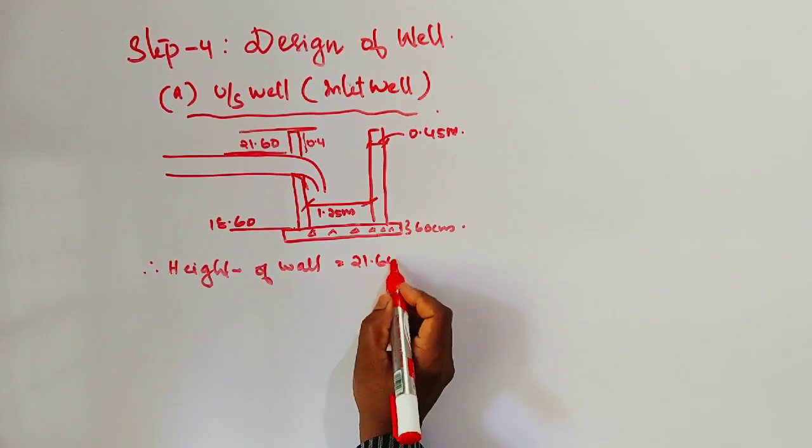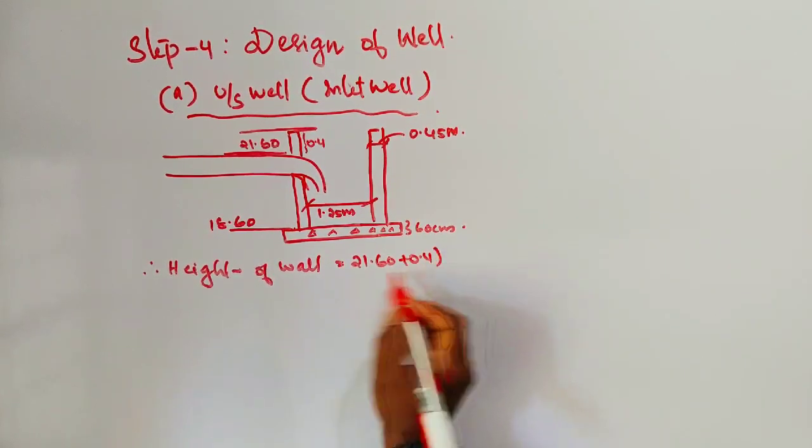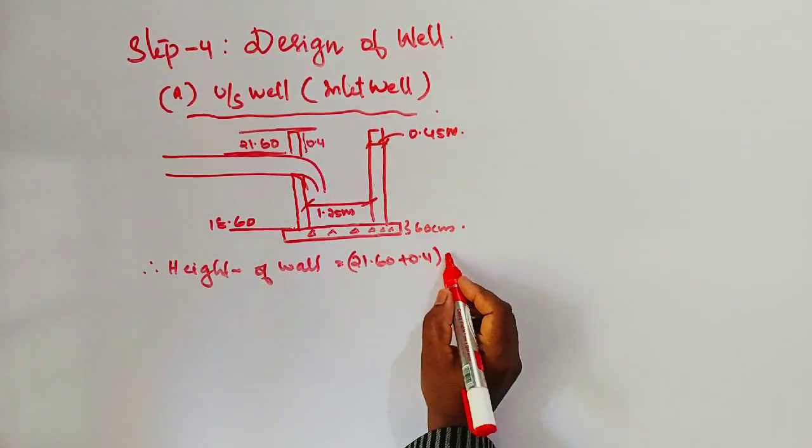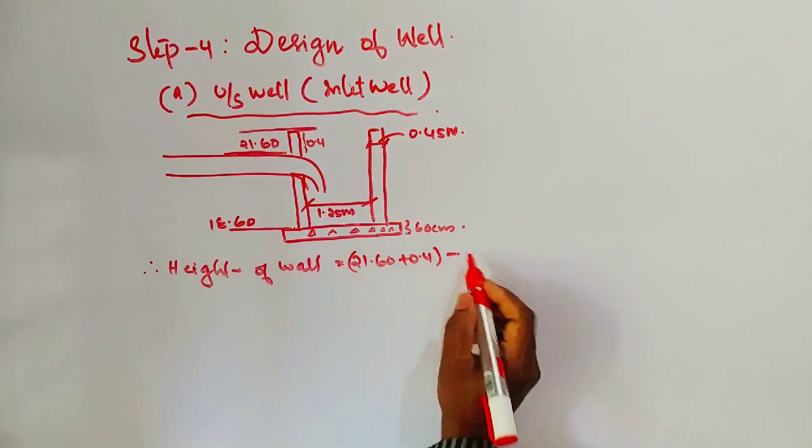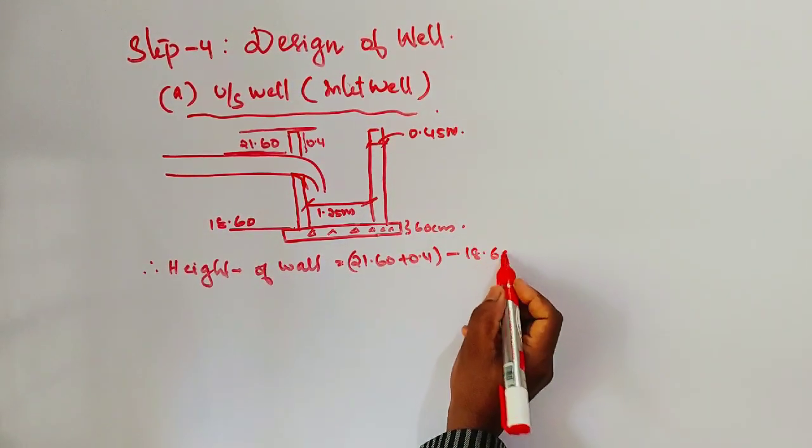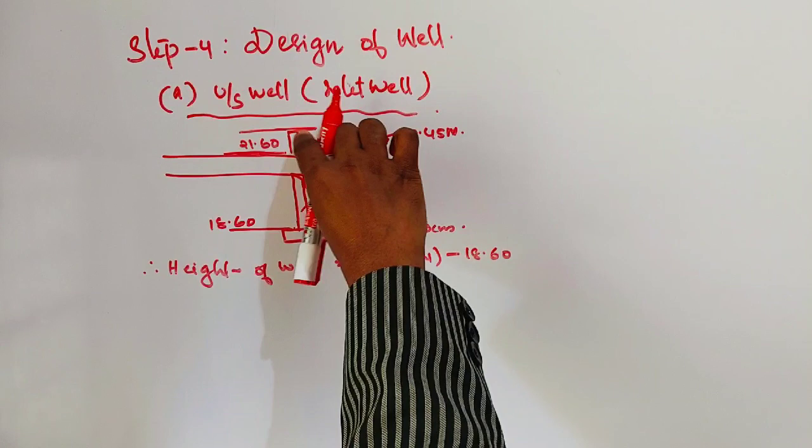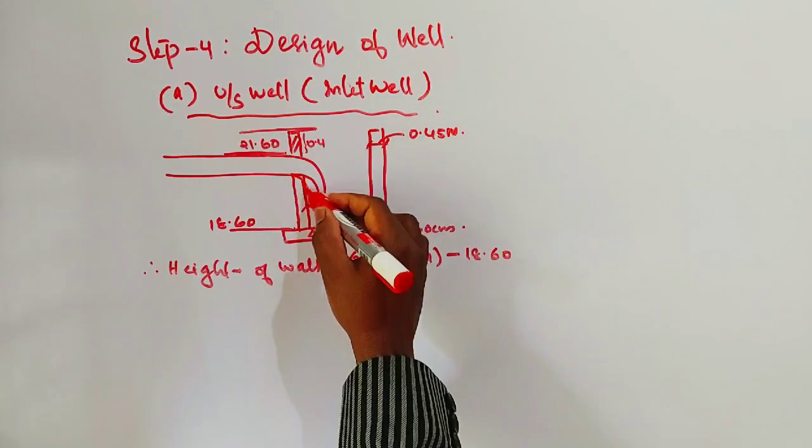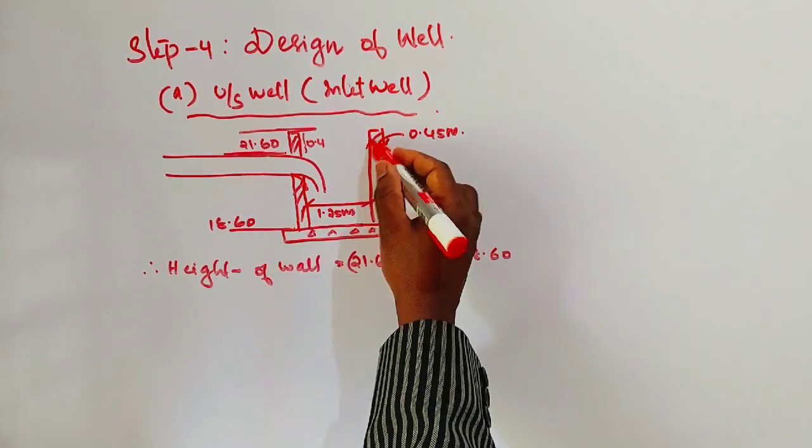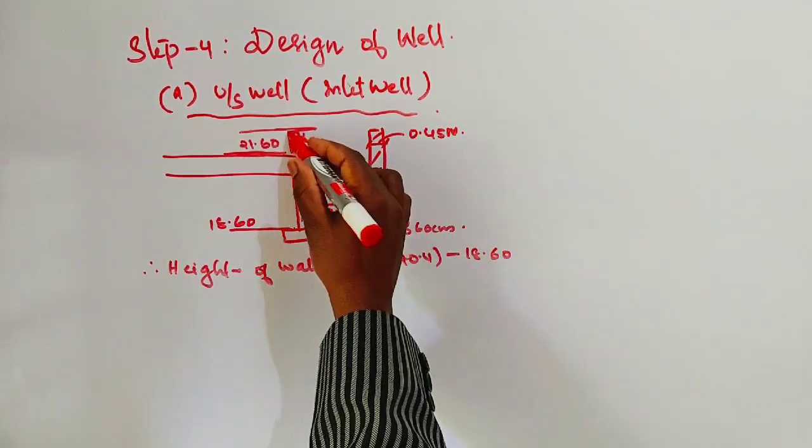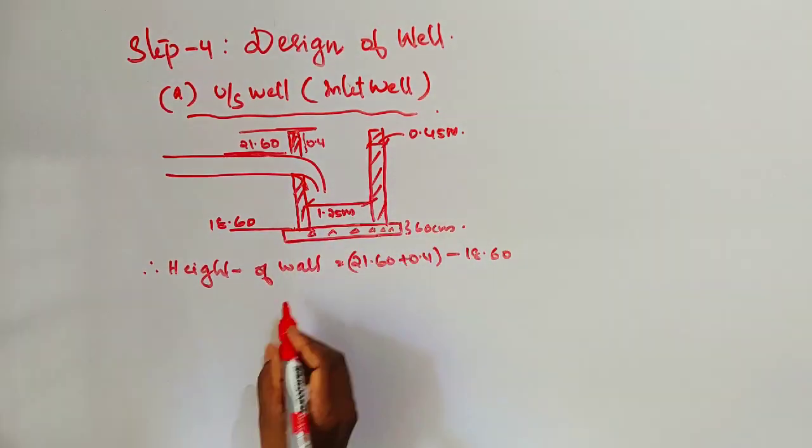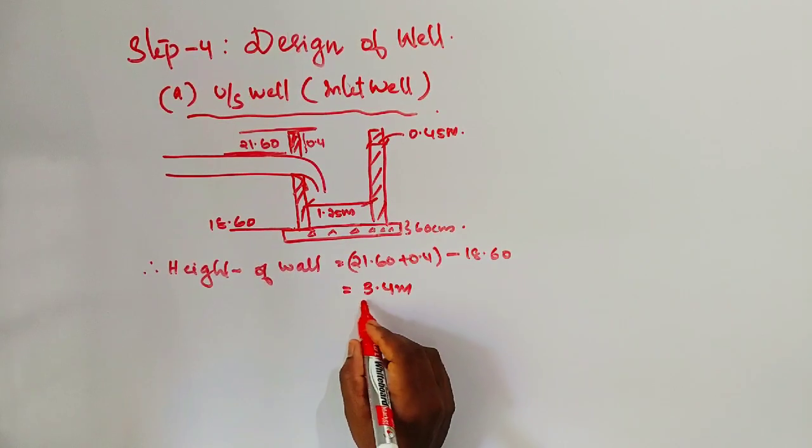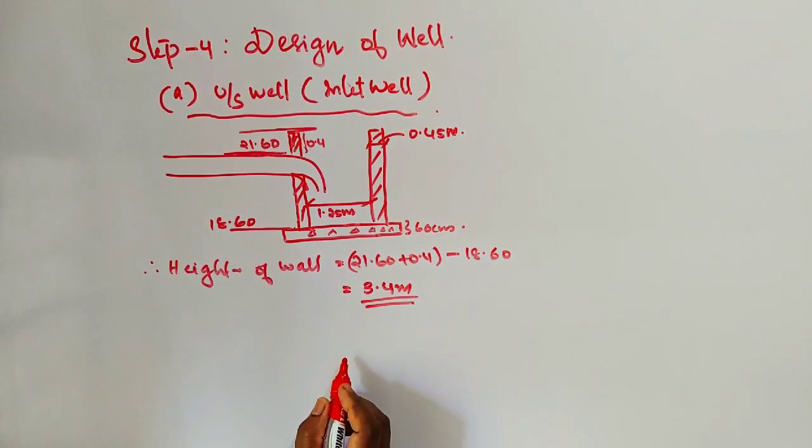Top level 21.6 plus 0.4 minus bottom level 18.6. Top level minus bottom level gives height of the wall. 21.6 plus 0.4 minus 18.6 equals 3.4 meters. Height of the wall equals 3.4 meters.